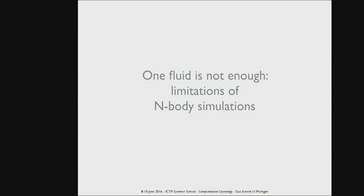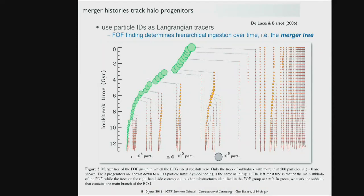Let's motivate doing two fluids explicitly by looking at some recent work pushing n-body simulations to essentially the limit. As I mentioned last time, there are subhalos within halos, and halos form through hierarchical merging. When you store snapshots from your simulation, you can do halo finding at each snapshot. By having identifications of every particle, you can do Lagrangian tracing of a structure present at redshift 10 and find where it is at redshift 2. You can trace the evolution of the merger history of a particular halo and generate merger tree diagrams.